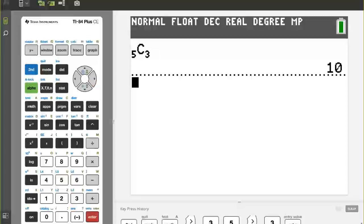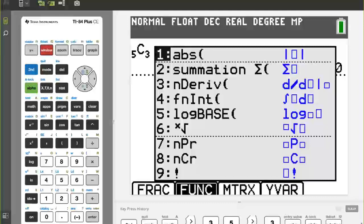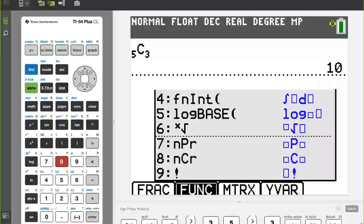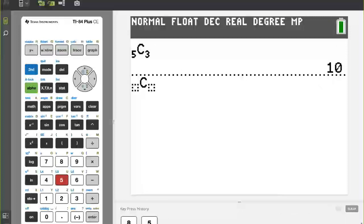Now, there's actually a shortcut to that same command. See the F keys up here, in green, F1, F2, F3. If I go alpha, F2, it shows me a set of useful templates, and the NCR command is one of them, number 8. So there it is, the same thing, 5c3, and that's still 10.